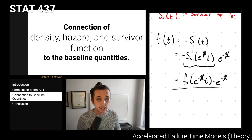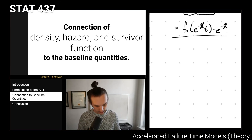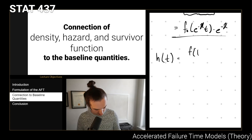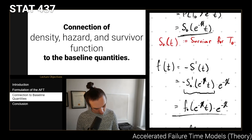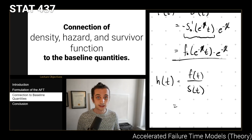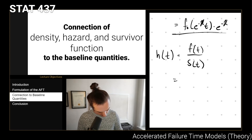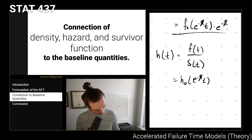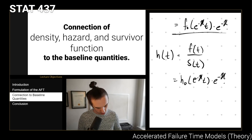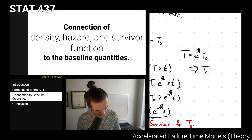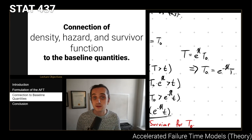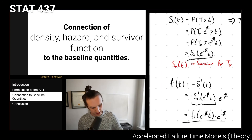That gives us the density with respect to the original density. For the hazard, the hazard function equals the density divided by the survivor function. The density is f0 times that multiplicative term, and the survivor function is S0, so the ratio of the density of t0 to the survivor function of t0 is exactly the hazard function of t0. We get h(t) = h0(e^(-eta)*t) * e^(-eta). This all stems from t = e^eta * t0, or equivalently t0 = e^(-eta) * t, and you could also derive this via a standard change of variables.